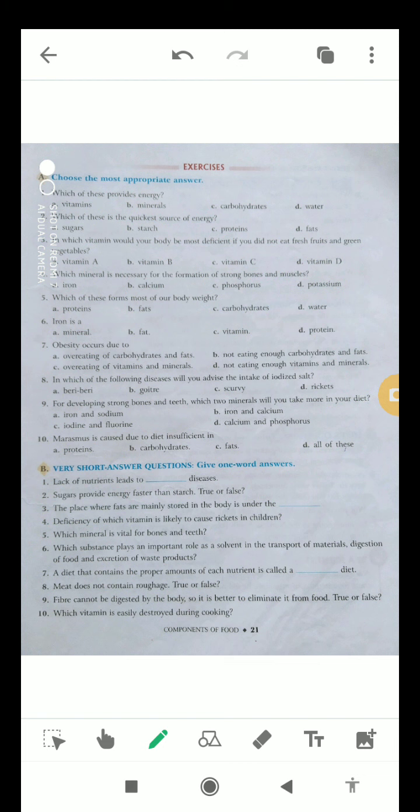Question number nine, for developing strong bones and teeth, which two minerals will you take more in your diet? The options are iron and sodium, iron and calcium, iodine and fluorine, and calcium and phosphorus. So the correct answer is calcium and phosphorus.